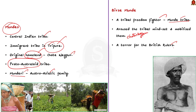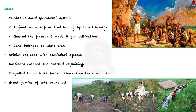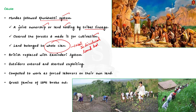The Mundas followed the Khuntkatti system — a joint ownership of land, or holding land by tribal lineage. The Mundas usually cleared the forests and made the land fit for cultivation, so the land belonged to the whole clan and not a particular individual. The British replaced this egalitarian system with the Zamindari system. Outsiders entered the tribal landscape and started exploiting them, and the Mundas were compelled to work as forced laborers on their own land. Then poverty engulfed them like a suffocating chain.